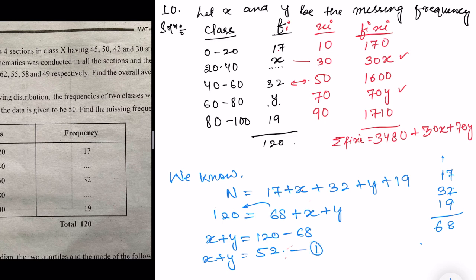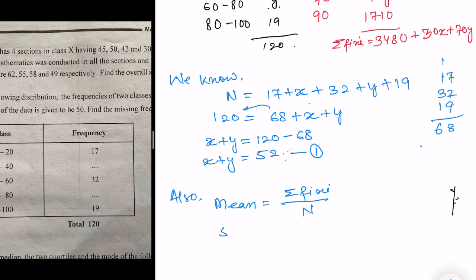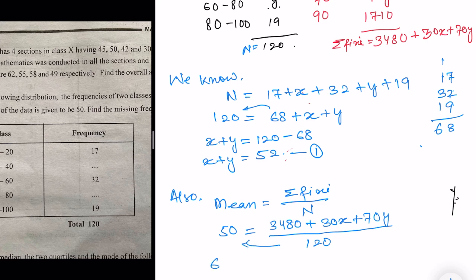For Equation 2, we use the mean formula: Mean = Σfi·xi / n. The mean is 50 and n = 120. So: 50 = (3480 + 30x + 70y) / 120. Multiplying both sides by 120 gives: 6000 = 3480 + 30x + 70y.